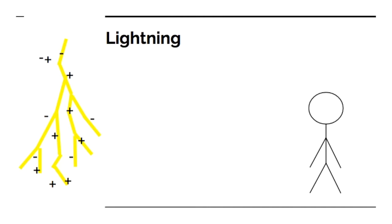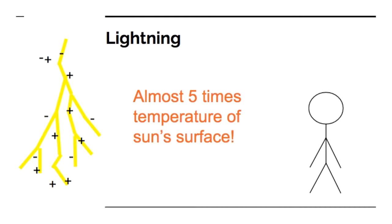It's the same thing that happens when you get a static electricity shock when you touch a light switch or something like that, and it gets very, very hot. As a matter of fact it gets almost five times the temperature of the Sun's surface and that produces light and it produces sound.